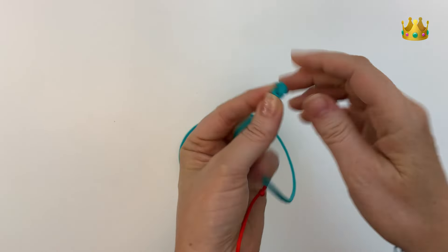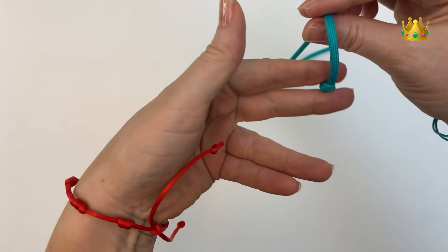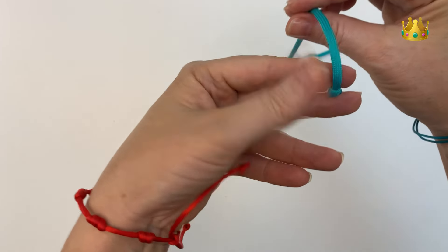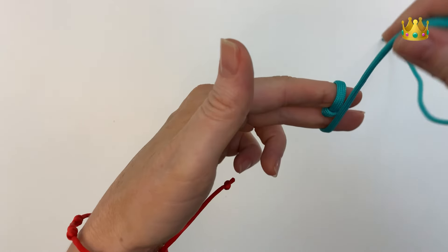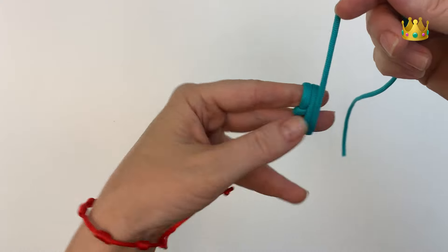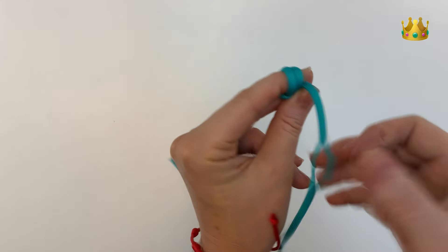To start our mini monkey fist knot, we hold that little overhand knot between our left index finger and middle finger. Now we bring this cord around our fingers up and down two times, so we've got two layers on the top and two layers on the bottom.